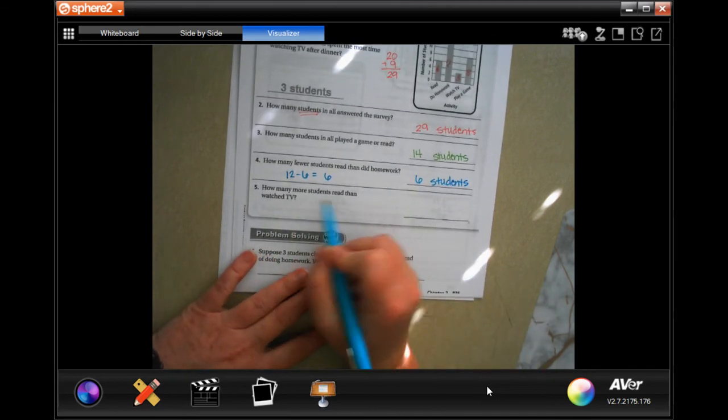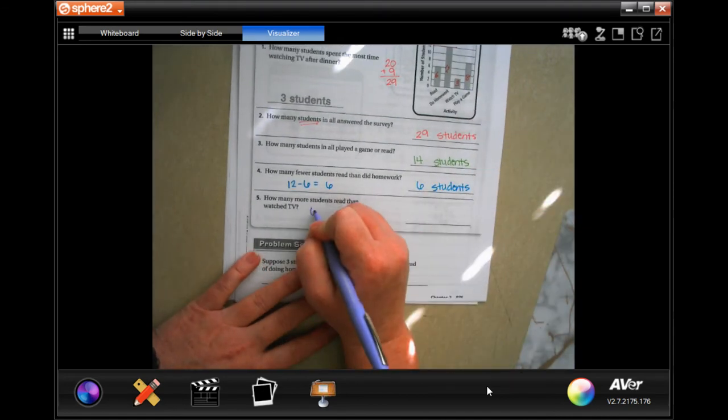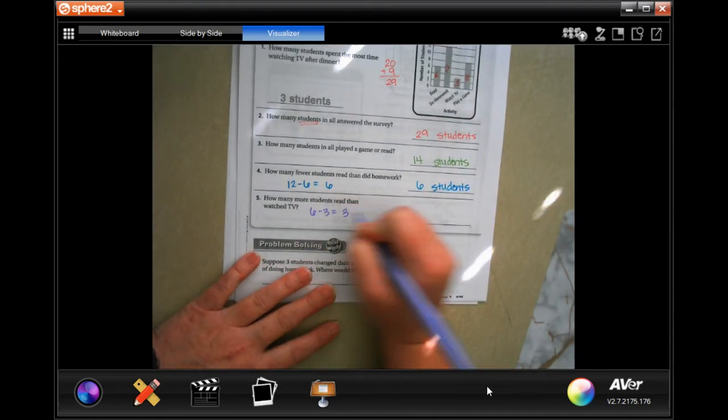How many more students read than watch TV? Well read was six and watch TV was three, so six minus three and that's three. Three students.